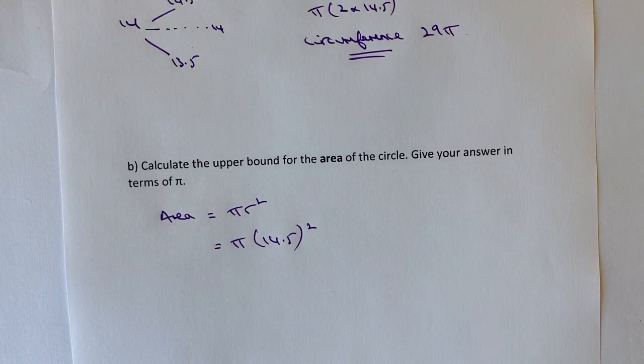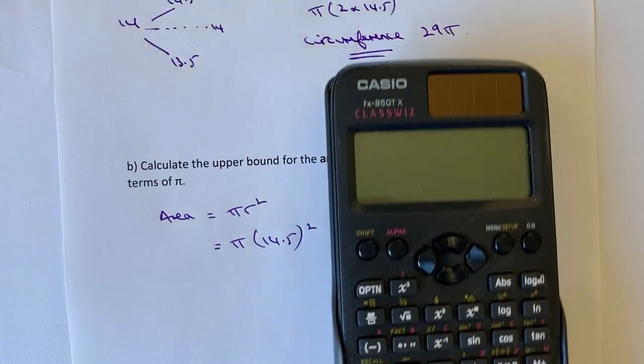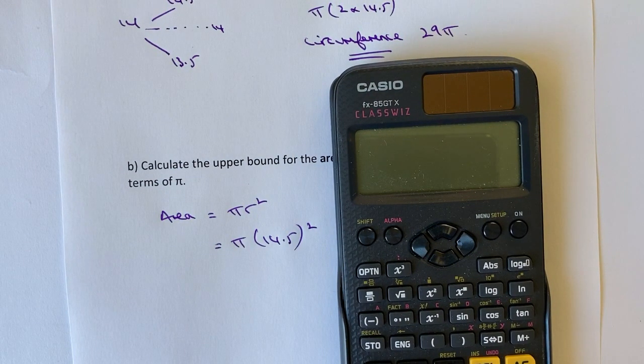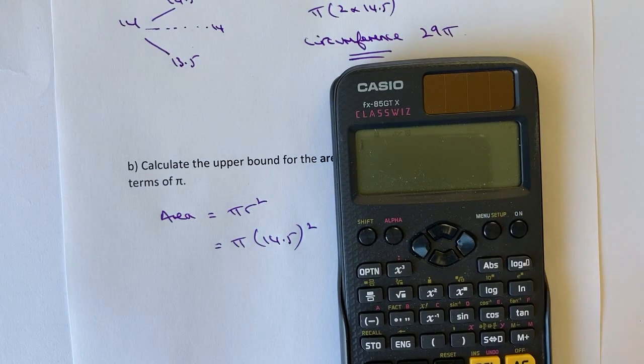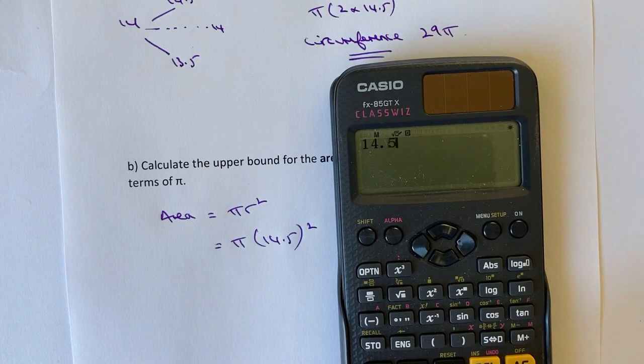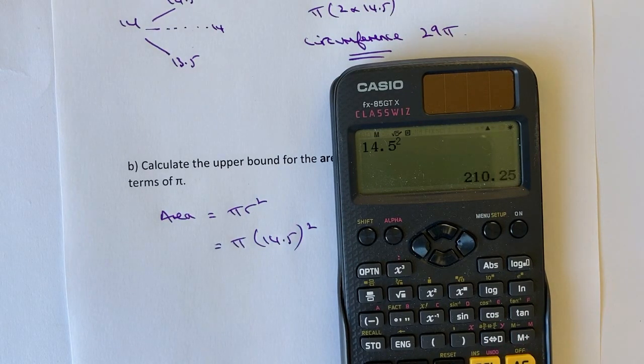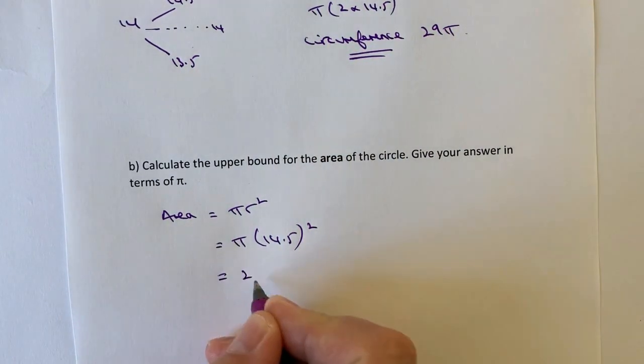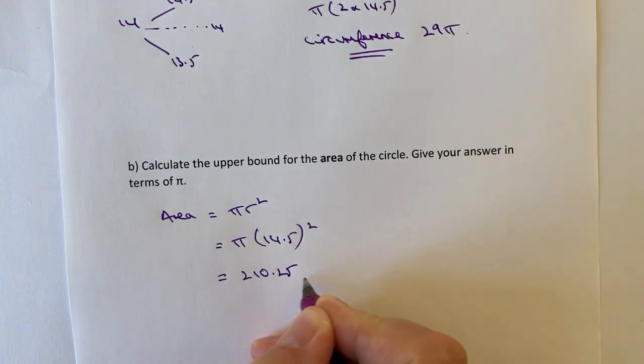So if I just pop that into my calculator, all I'm going to do here is just use my calculator. I'm going to say it's 14.5 squared. And that's going to give me an answer of 210.25. So that's going to be 210.25π.